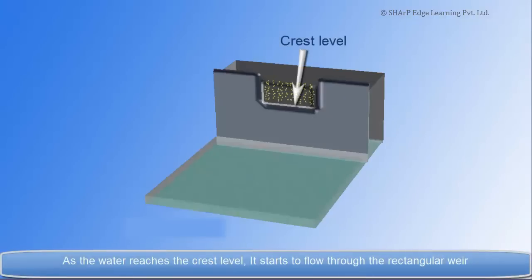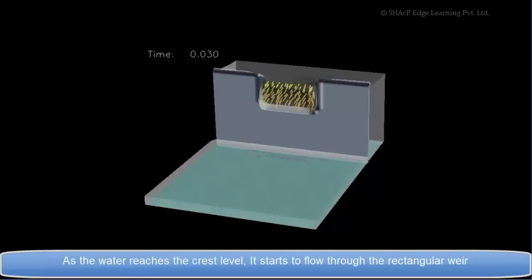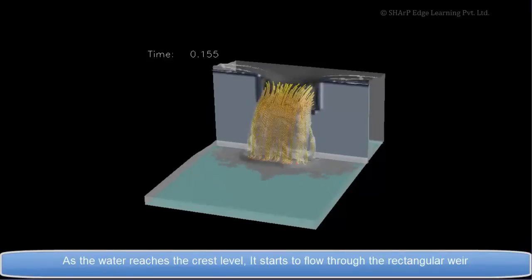As the water reaches the crest level, it starts to flow through the rectangular weir.